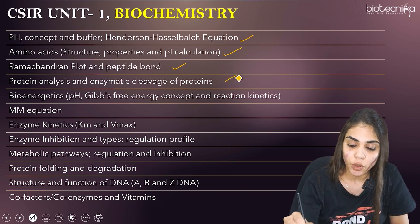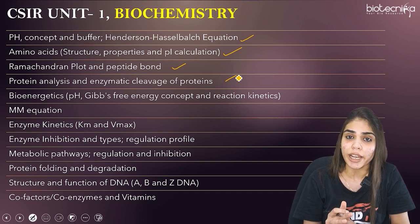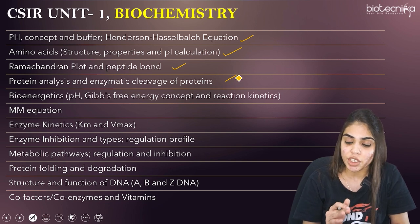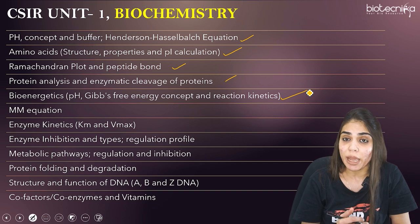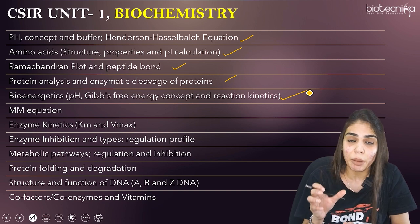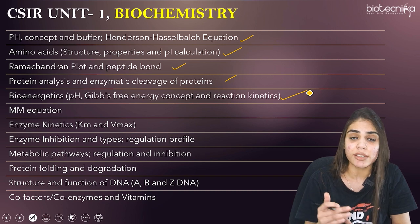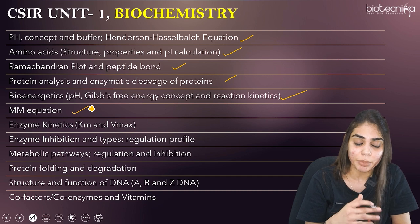The next topic is bioenergetics. You should know about bioenergetics and thermodynamics — how to calculate Gibbs free energy, standard free energy, delta G and delta G naught. You should know about the Michaelis-Menten equation and what the final MM equation is, and also how regulation is done and what the Lineweaver-Burk plot is. You should know about the MM equation as well as the LB plot.